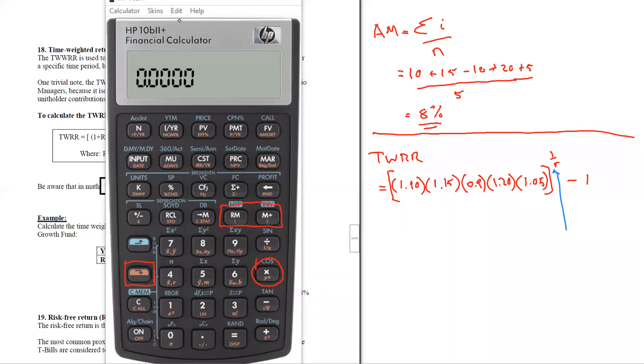We'll do the math here, so let's just do this: 1.1 times 1.15 times 0.9 times 1.2 times 1.05 equals.